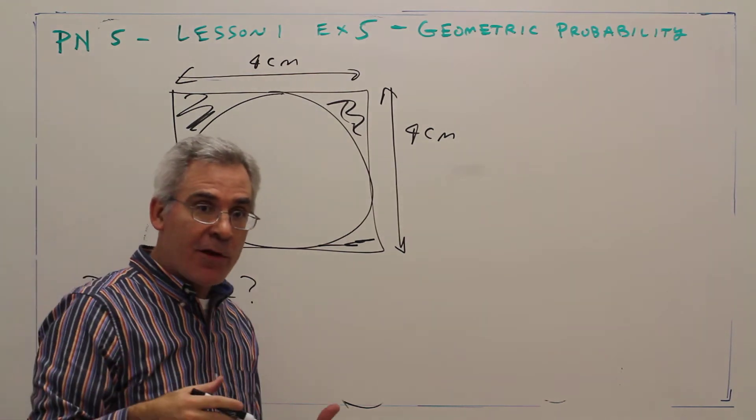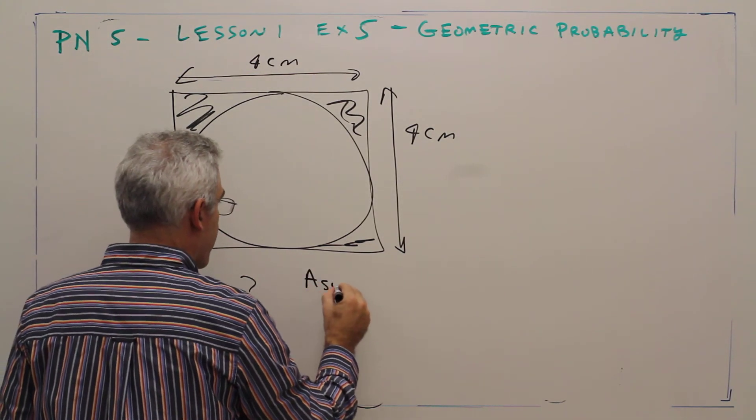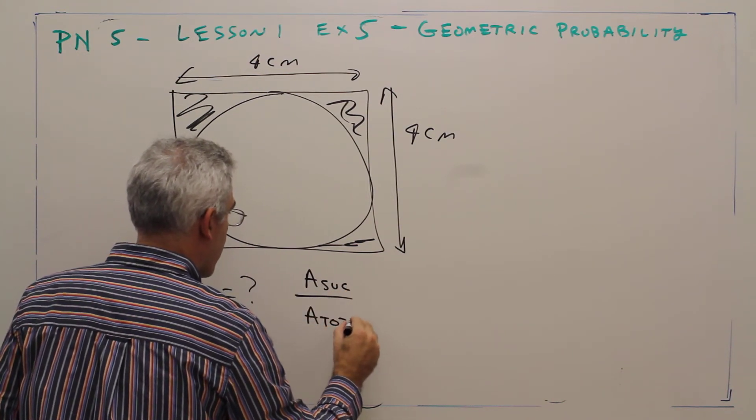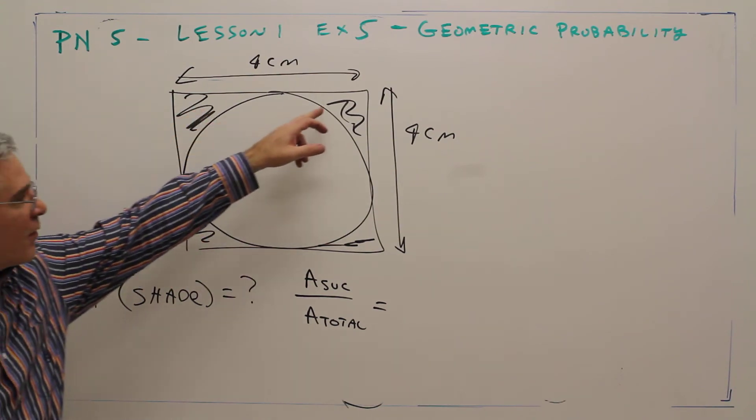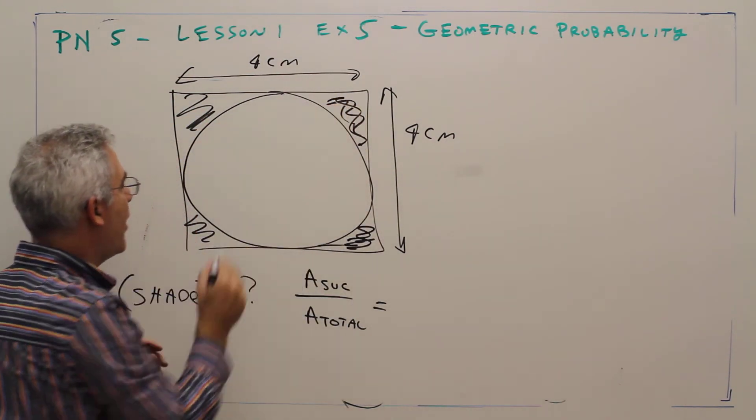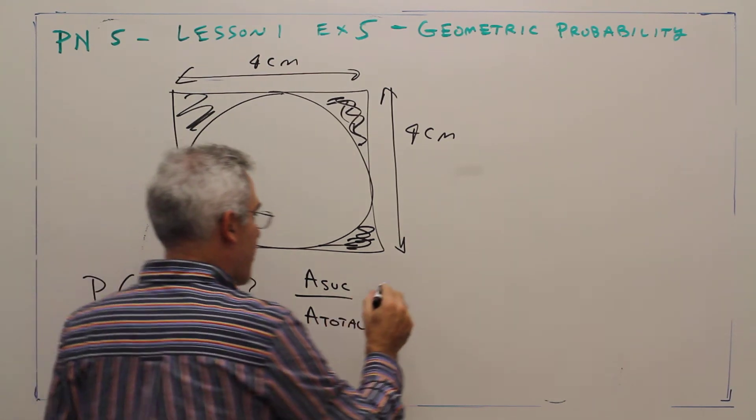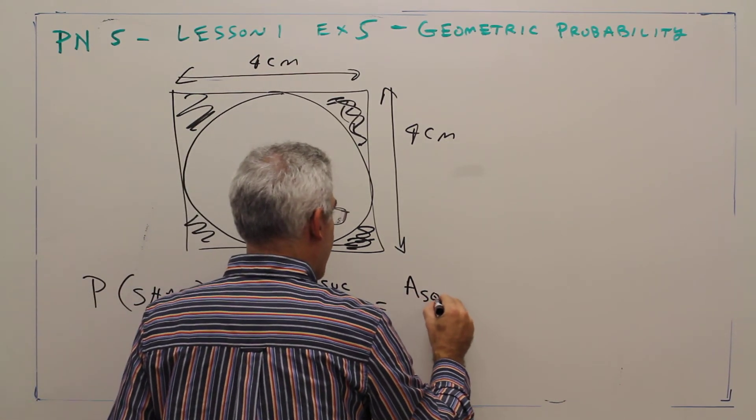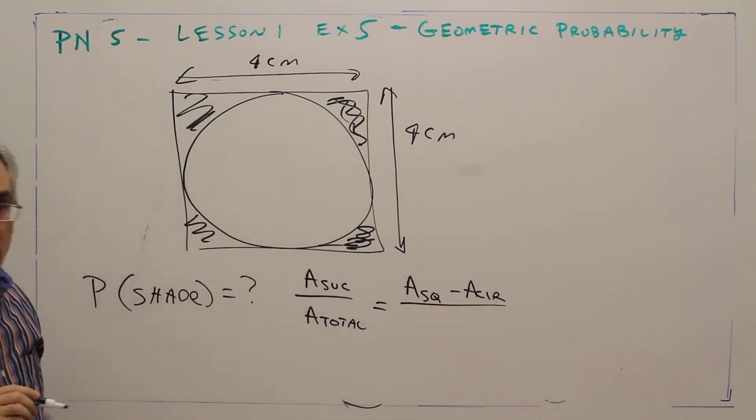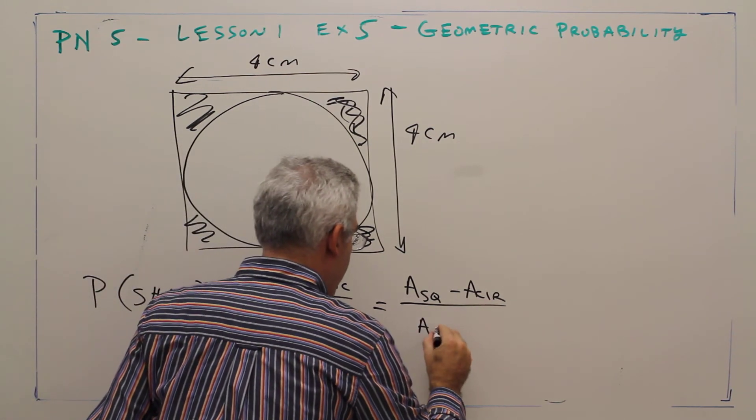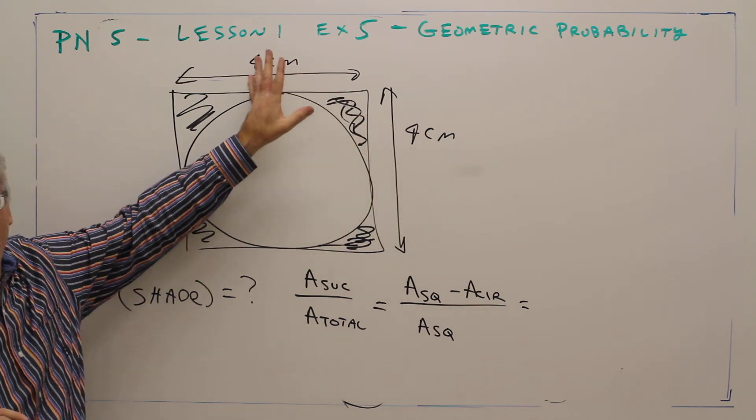So it's going to be area of success over area total. The area of success is this shaded region, which is really the square take away the circle. So I'm going to say area of square minus area circle. The area total is the area of the square.